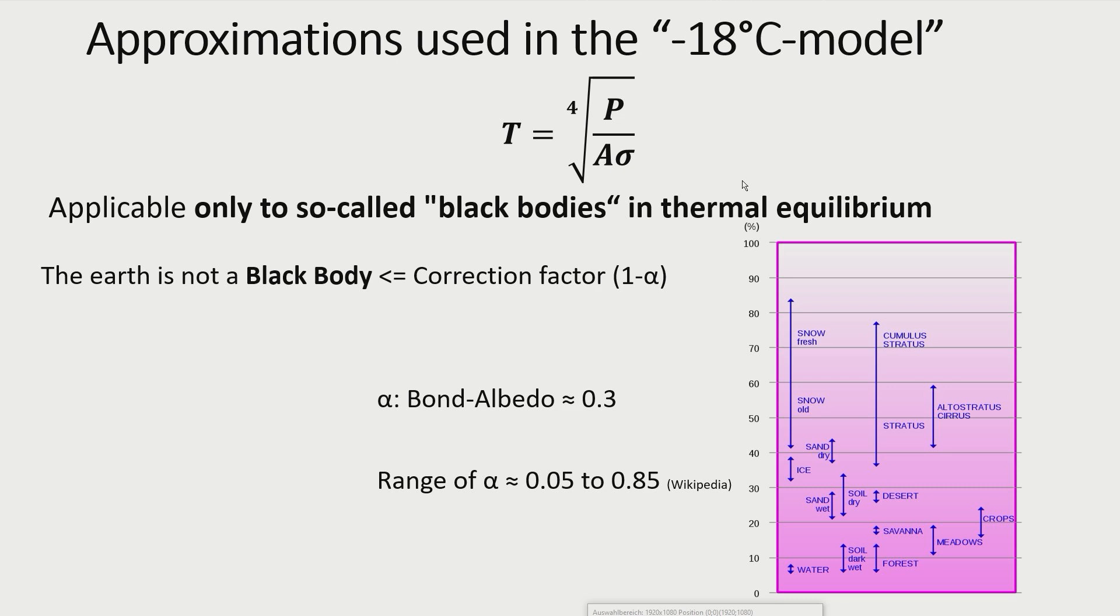Alpha is the so-called bond albedo. It is a measure for the reflectivity of a surface. Surfaces that absorb all incoming electromagnetic radiation have an alpha of 0. Surfaces that reflect all incoming electromagnetic radiation have an alpha of 1. For the Earth the value of alpha was determined by satellite measurements to be about 0.3.